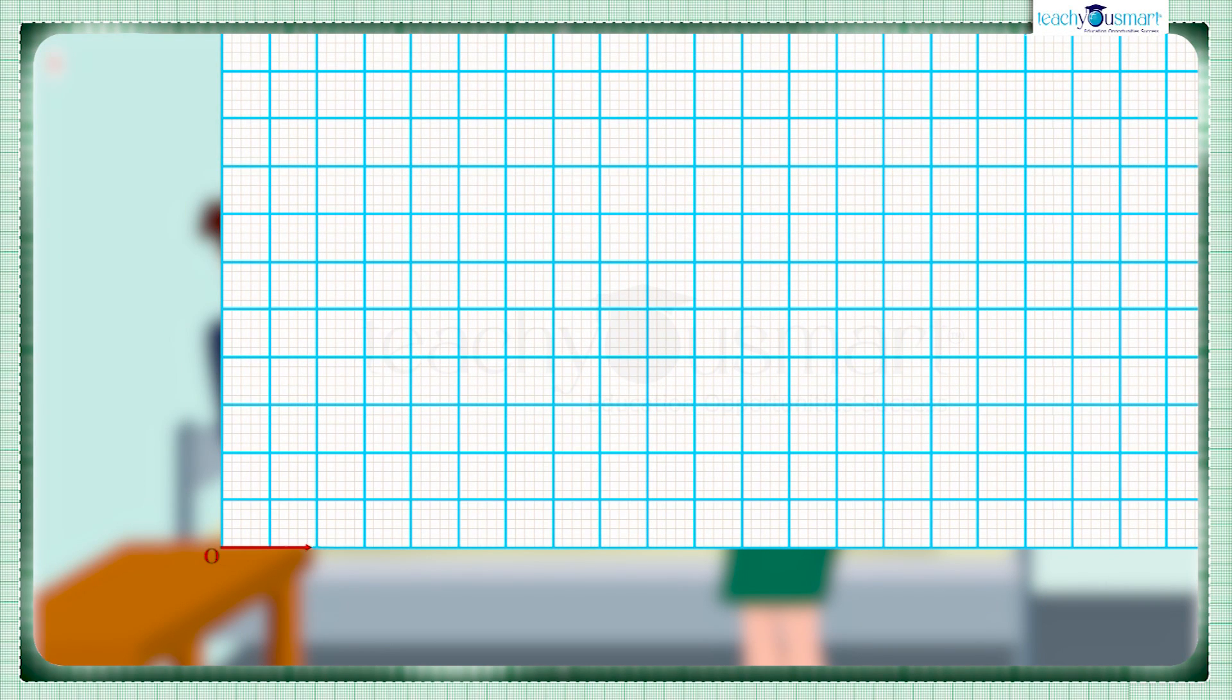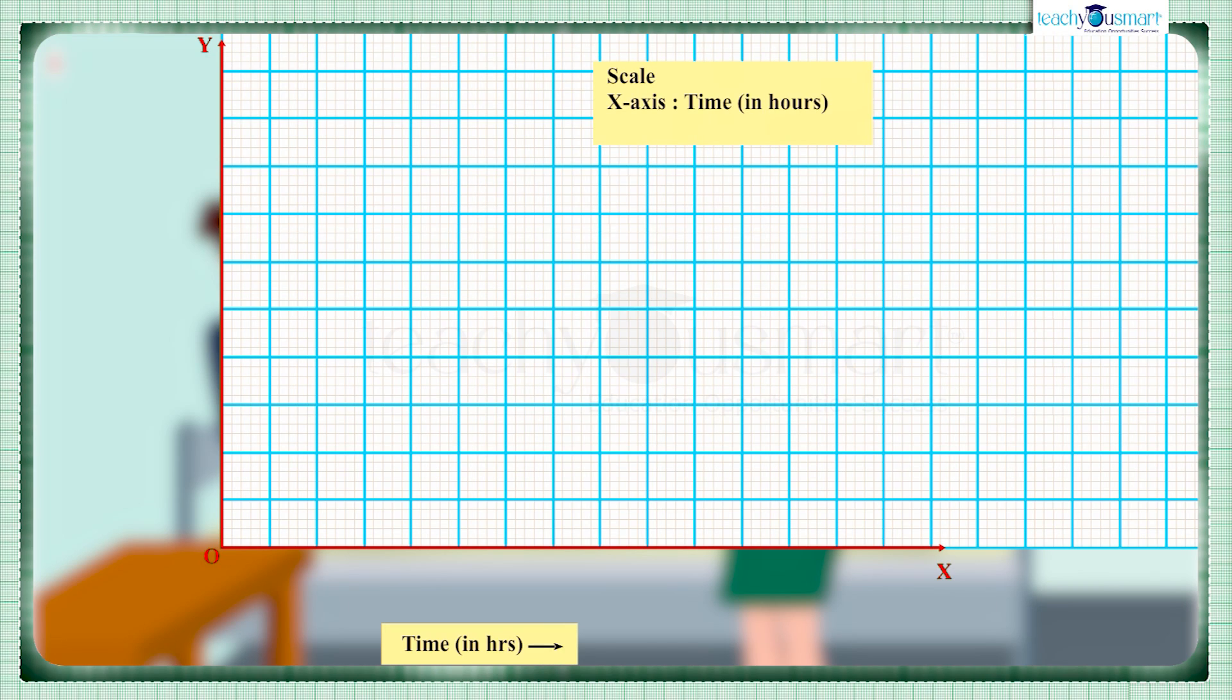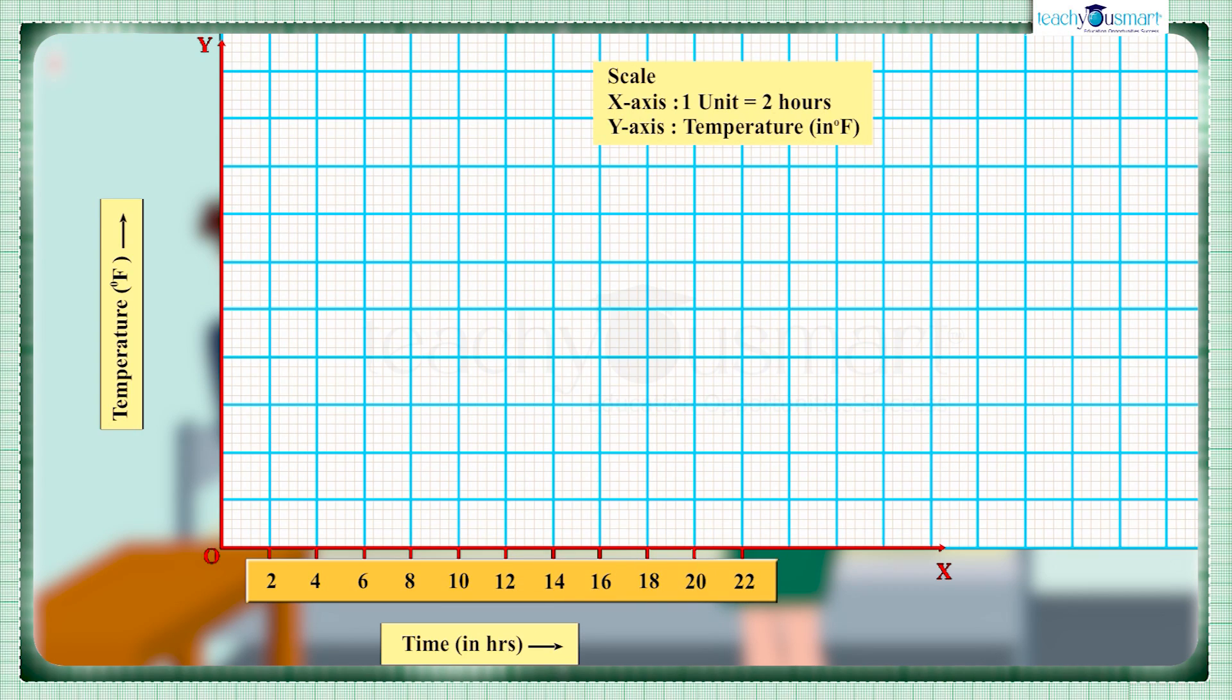In order to represent this data graphically, we represent time on the x-axis and temperature on the y-axis. Let us take the scale as one unit on the x-axis represents two hours, and one unit on the y-axis represents one degree Fahrenheit.